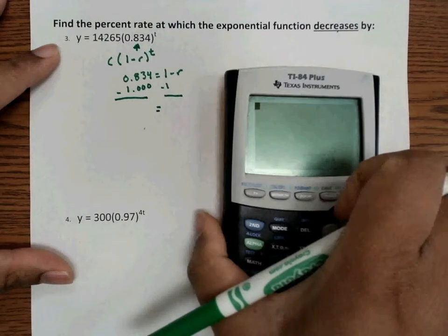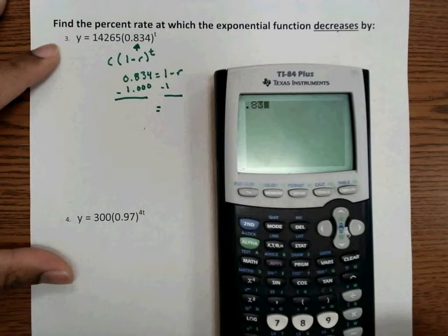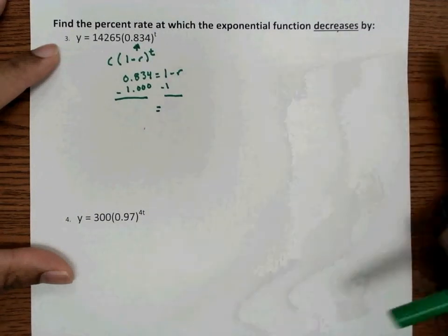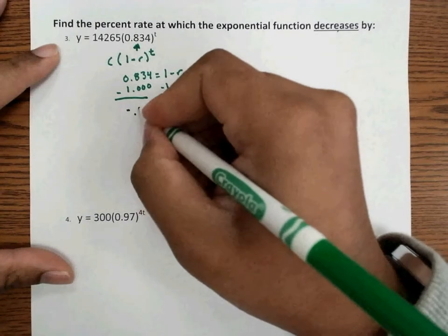So those of you who are more comfortable with the calculator, just type in 0.834, and you can subtract the one. And as you can see, we get negative 0.166.